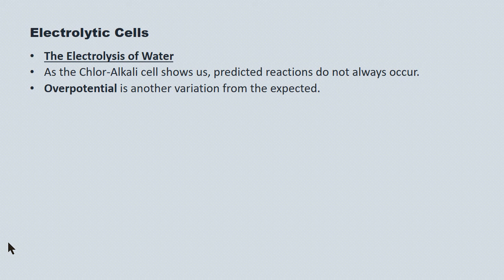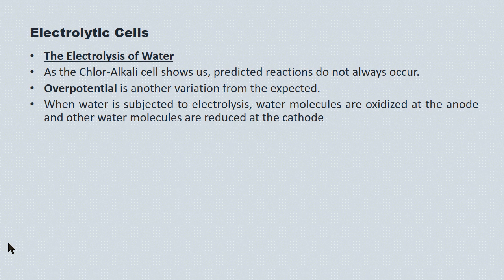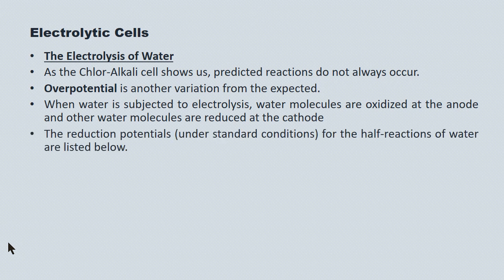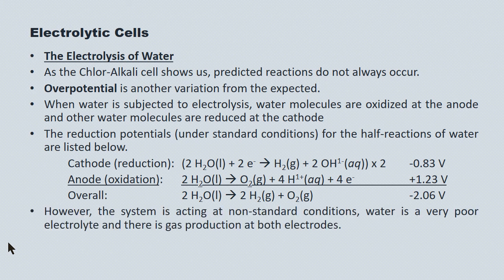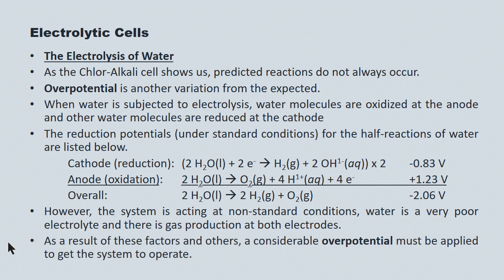Overpotential is another variation from what we expect in these systems. When water is subjected to electrolysis, water molecules are oxidized at the anode and other water molecules are reduced at the cathode. The reduction potentials under standard conditions give an overall redox reaction voltage of negative 2.06 volts. However, the system operates at non-standard conditions: water is in fact approximately 55 molar, while standard conditions require one mole per liter. Water is also a very poor electrolyte, and there's gas production at both cathode and anode. As a result, a considerable overpotential must be applied — you need to apply much more than 2.06 volts to electrolyze water.